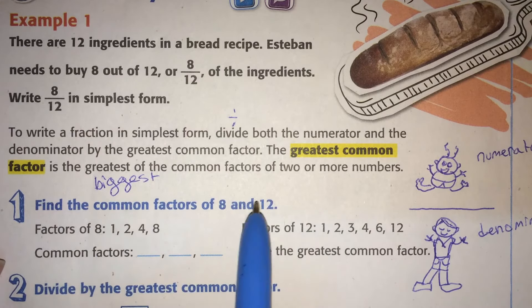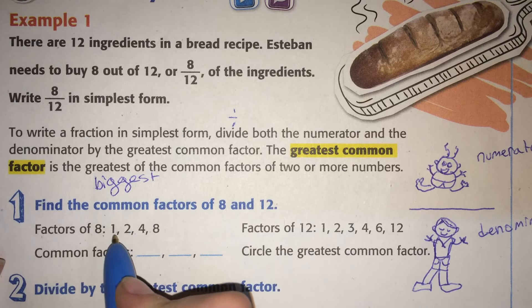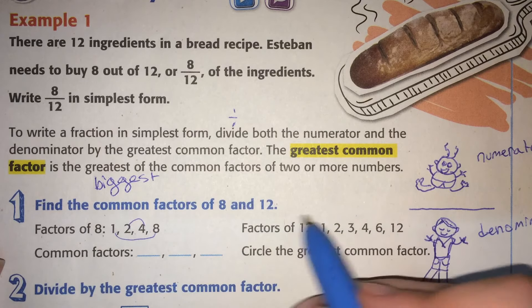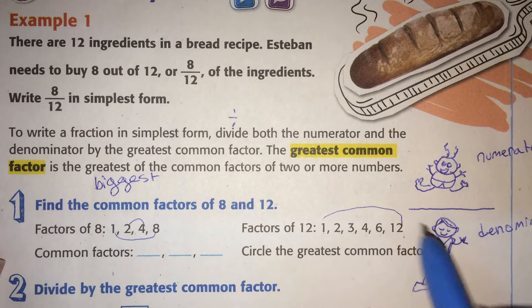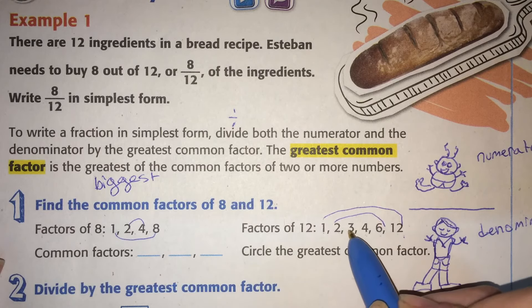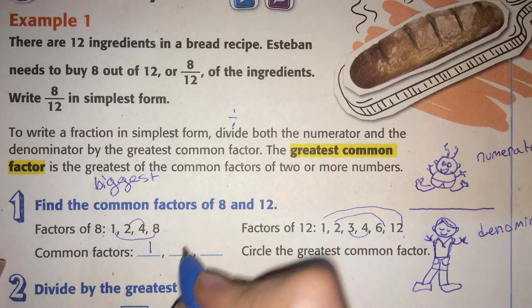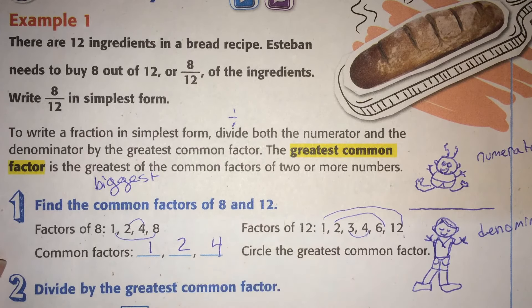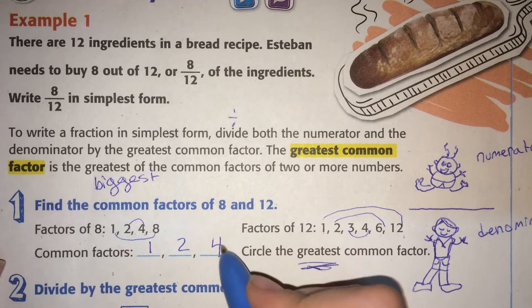So find the common factors of 8 and 12. The factors of 8 are 1, 2, 4, and 8, right? Because 1 times 8 equals 8 and 2 times 4 equals 8. And the factors of 12 are 1, 2, 3, 4, 6, and 12. Because 1 times 12 is 12, 2 times 6 is 12, and 3 times 4 is 12. So which ones are common? Which ones are the same? They both have 1, they both have 2, and they both have 4. So these are the common factors. Now we want the greatest one, the biggest one. So we'll circle the biggest one. We want 4.